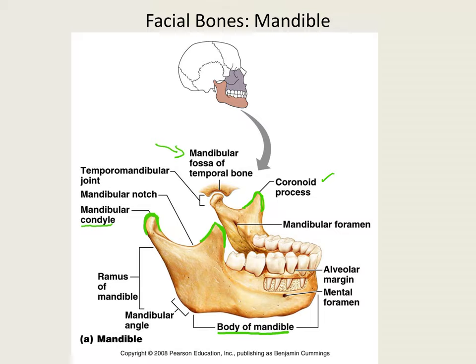The mandibular condyle creates the temporomandibular joint — sometimes shortened to TMJ — right here. This is where your jaw will hinge. Your mandibular condyle fits into the mandibular fossa of the temporal bone.